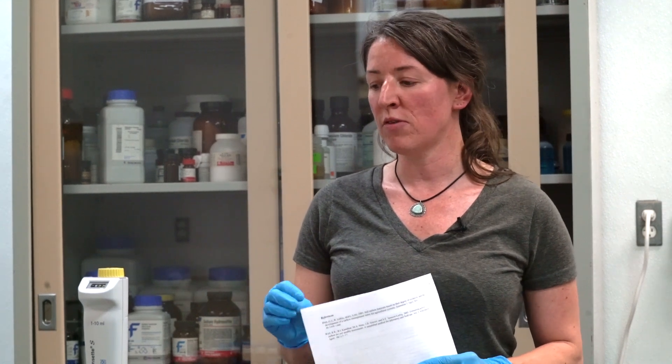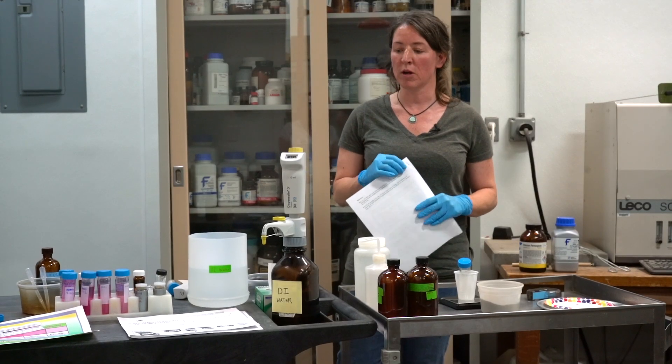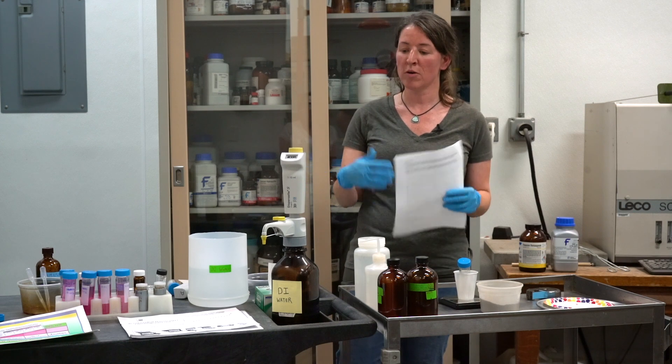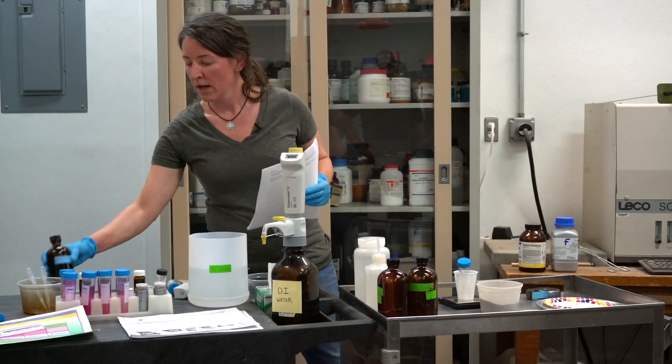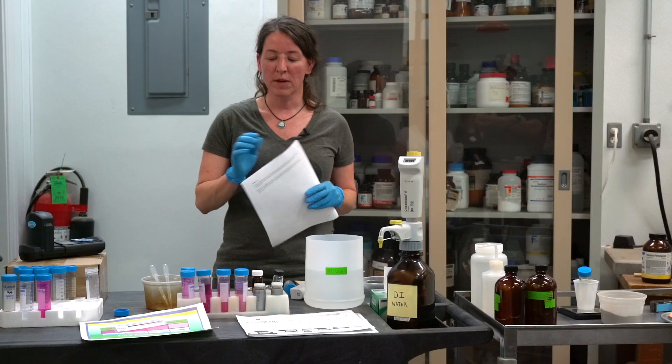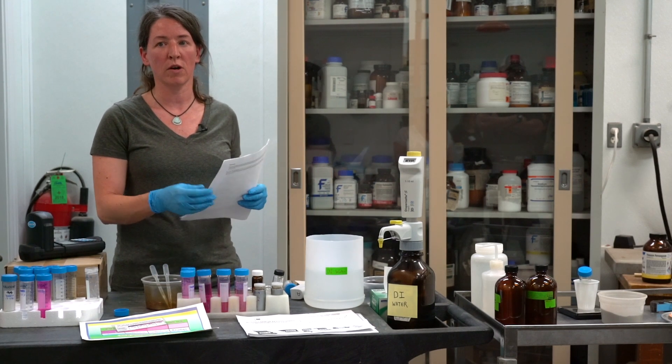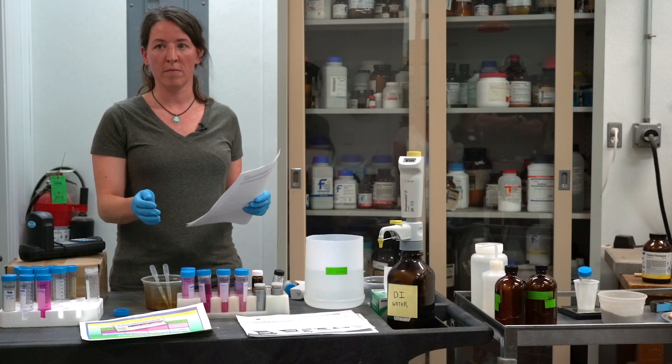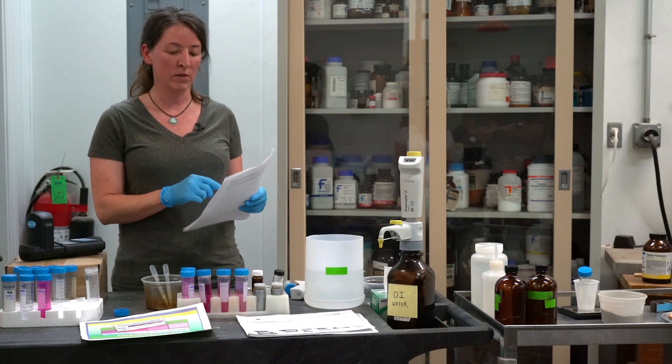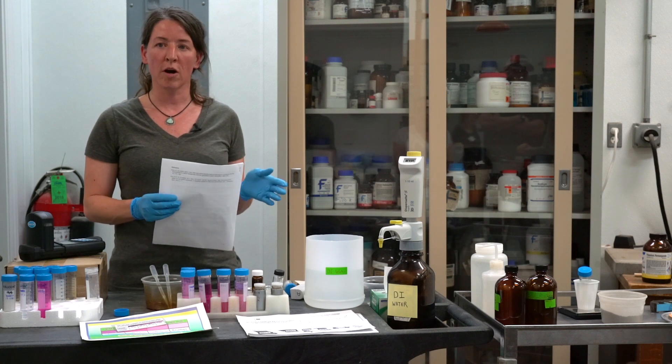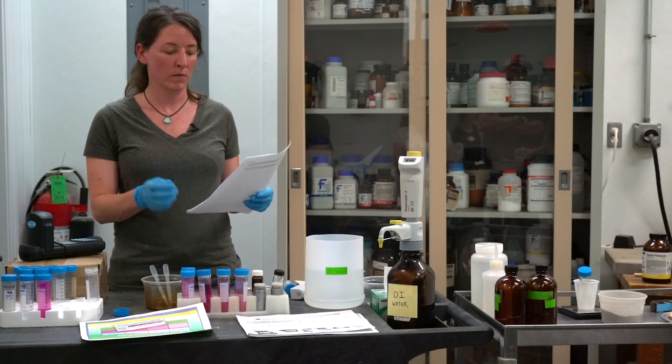When we're using potassium permanganate to analyze active carbon, we're actually measuring oxidizable carbon but it's closely related to the active carbon pool. The permanganate is a strong oxidizer and it reacts with the carbon in the soil. We're measuring the amount of permanganate that is reduced in the soil as it oxidizes carbon, and through the equation we can generate active carbon in milligrams per kilogram.